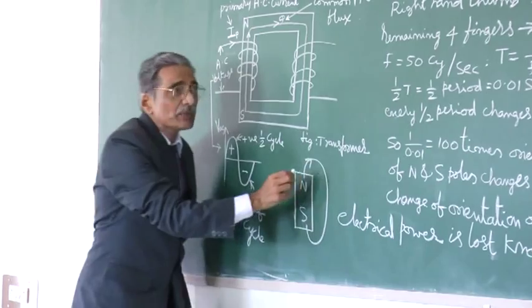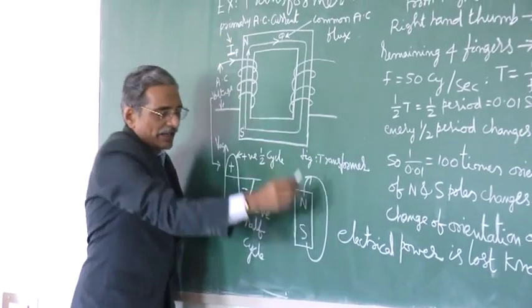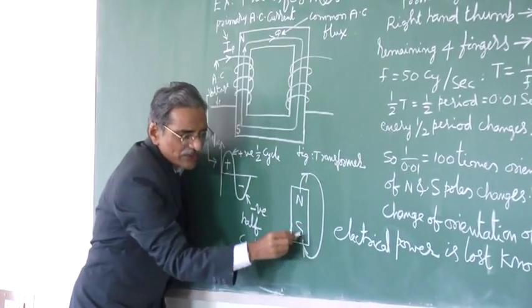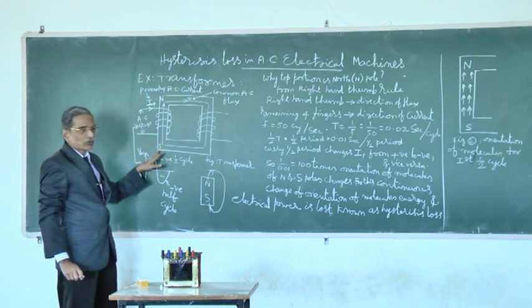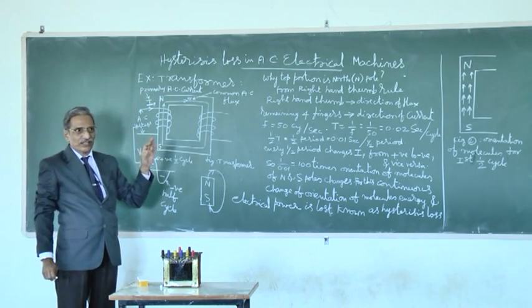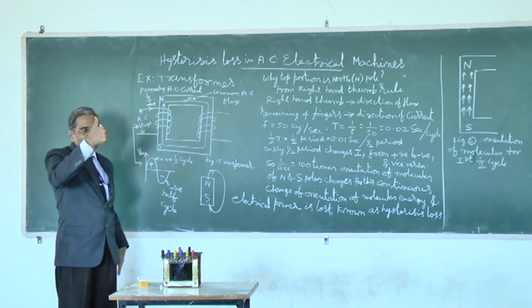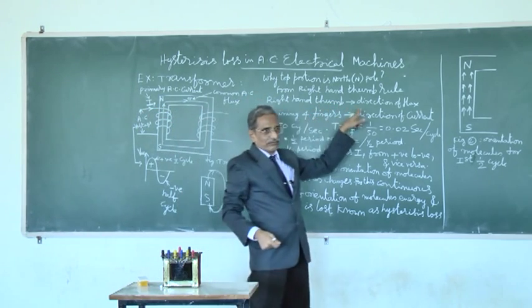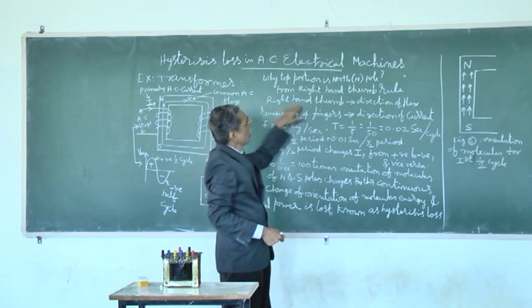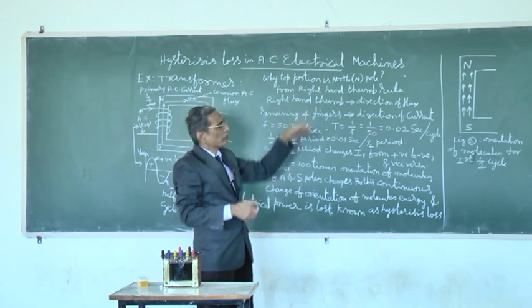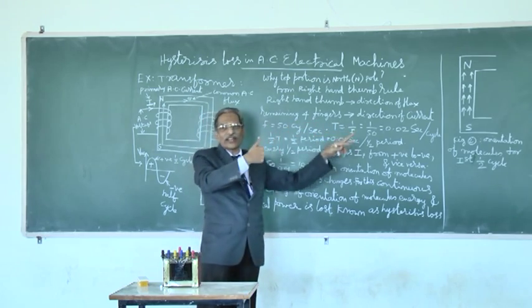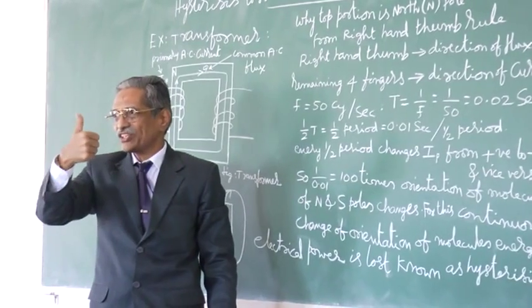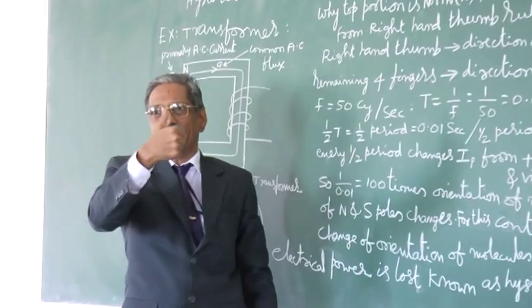Flux lines will start from north pole and reach the south pole like this. So, starting of flux lines means north pole. Like that, north pole and south poles are fixed by right hand thumb rule. So, that is what is written here. In right hand thumb rule, direction of flux is shown by right hand thumb and remaining four fingers in the right hand thumb.